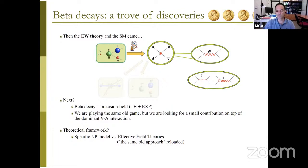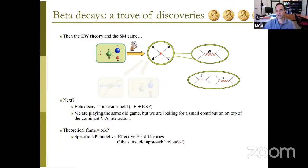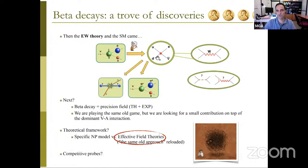Beta decay has become a precision field because you're looking for very small effects, requiring precision both theoretically and experimentally. There are two roads you can take: choose a specific new physics model, or use effective field theories — the approach I'll follow — where you put all interactions compatible with some symmetries and use data to constrain them. In an EFT framework you can compare different probes: beta decay versus pion decay versus proton-proton to electron–anti-neutrino at the LHC.